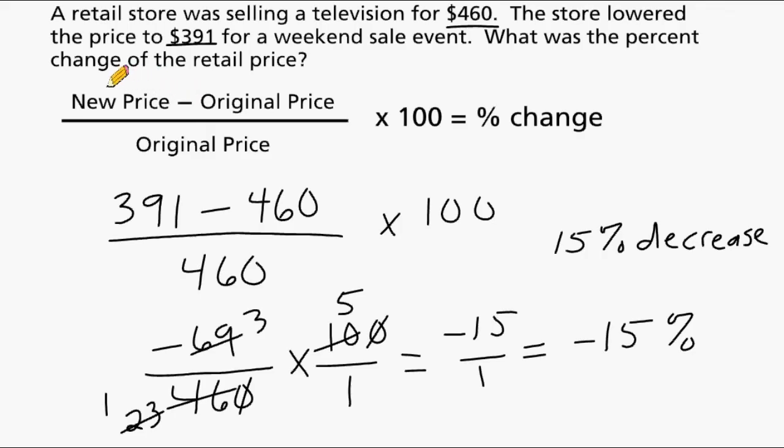Now that's why I like to write the new price first and then the original price, because by doing this, if you come up with a negative value you know that you're going to have a percent decrease. Although it's pretty obvious from the problem since they said they started with a higher price of $460 and then they lowered the price to $391, I still like to write the new price minus the original price so we can clearly see that if we get a negative it is a reminder that we are dealing with a price drop or a percent decrease.